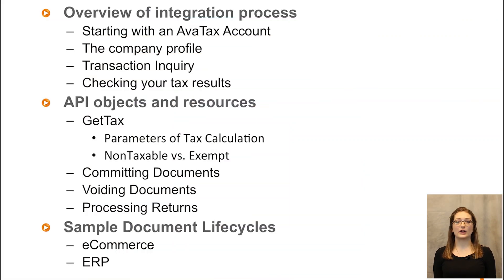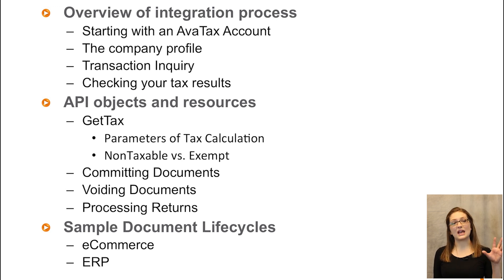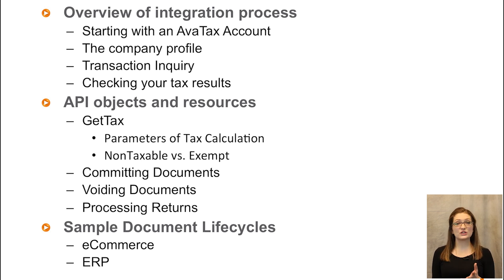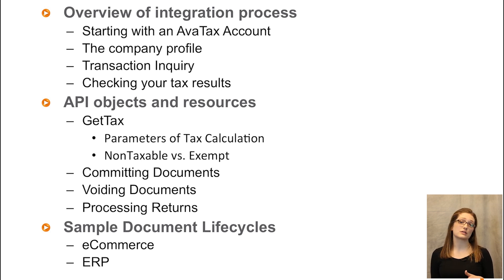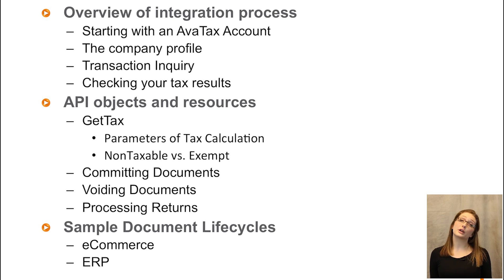Let's start with an overview of the integration process. We'll talk about starting with your AvaTax account, your company profile, looking up transactions once you get to record them, and checking your tax results. Then we'll move into talking about the actual API objects and resources, primarily Get Tax, the parameters you're going to need to use to calculate tax, some results you might see, as well as modifying documents, committing documents, voiding documents, and processing returns. Finally, we'll look at some sample document life cycles, which may be helpful to your integration.